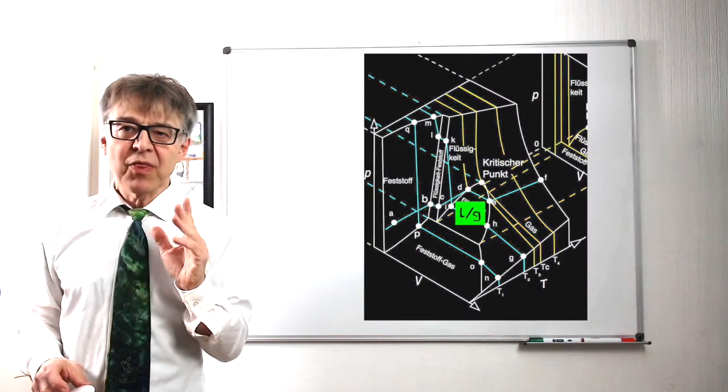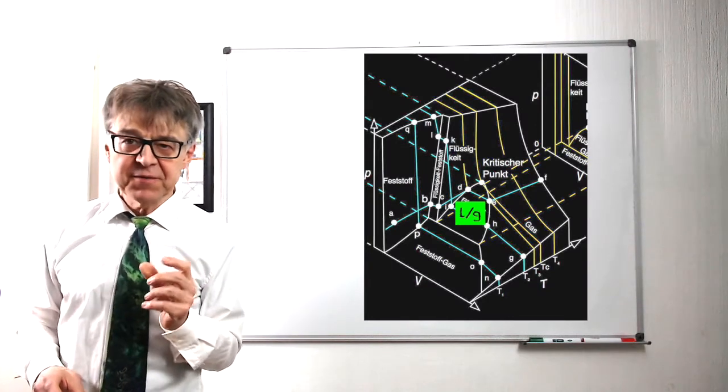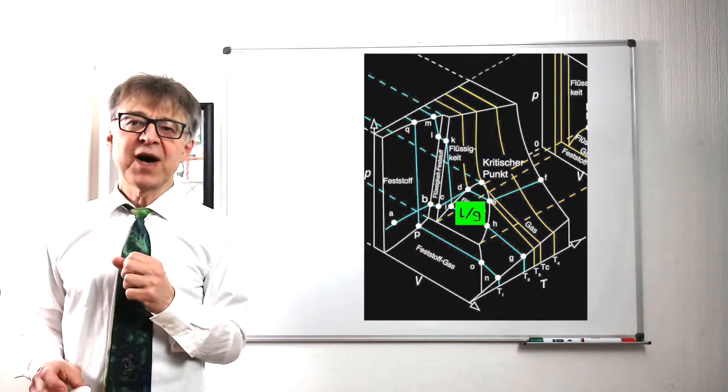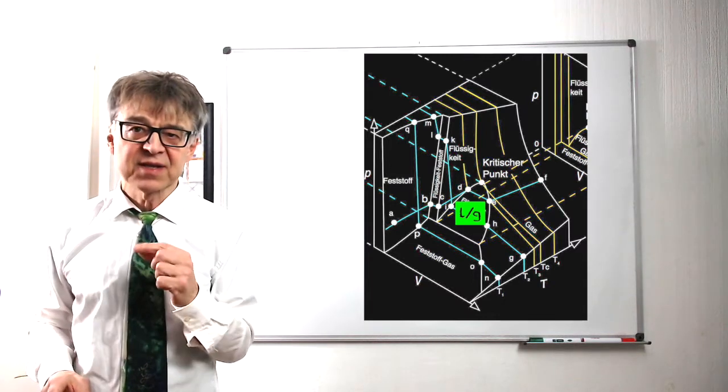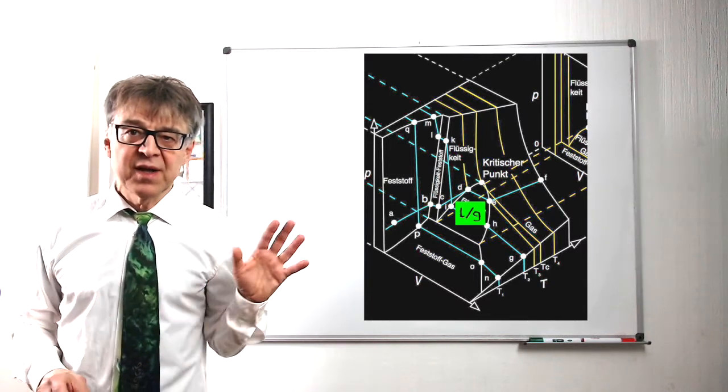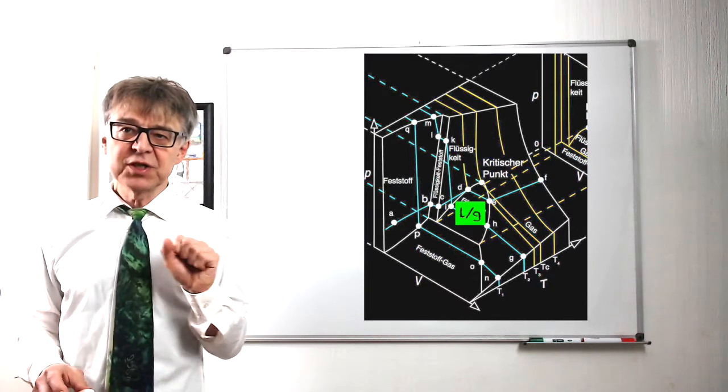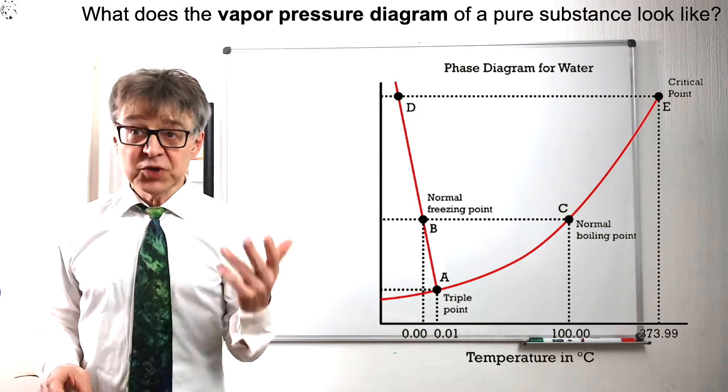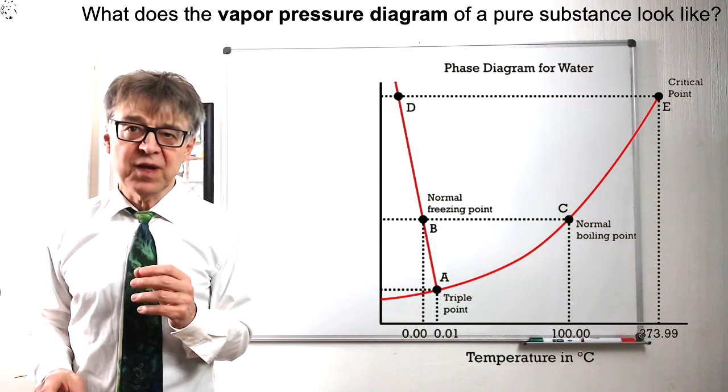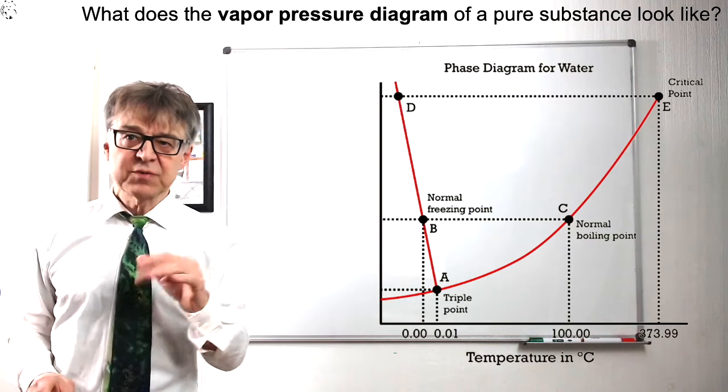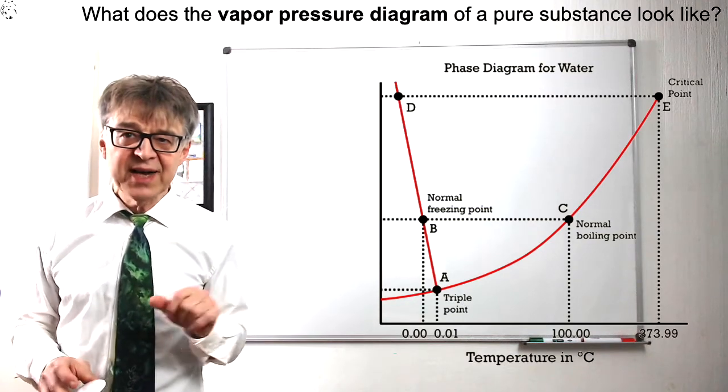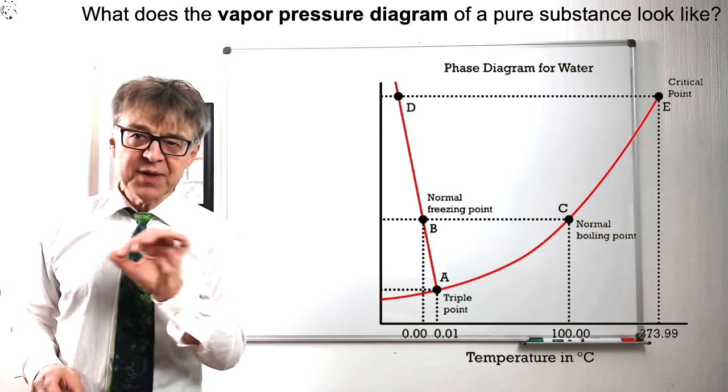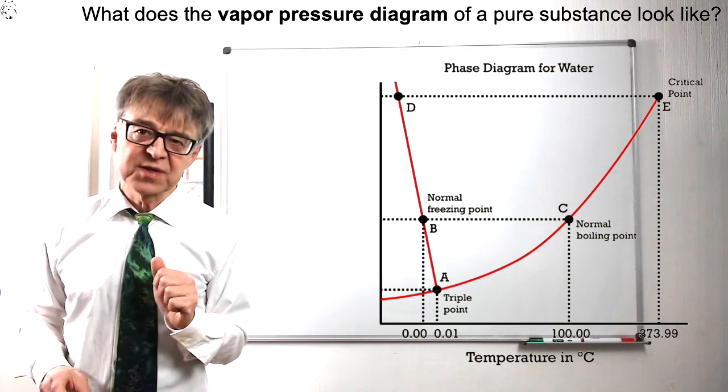You remember our three-dimensional PVT phase diagram? Where do we find vapor pressure in this diagram? It is this green region in which liquid and gas are present at the same time. If we project this phase diagram onto the PT surface, the two-phase region is reduced to a line and we get the typical PT phase diagram of a pure substance.